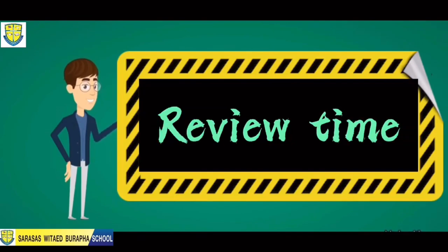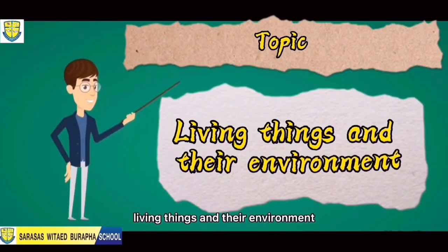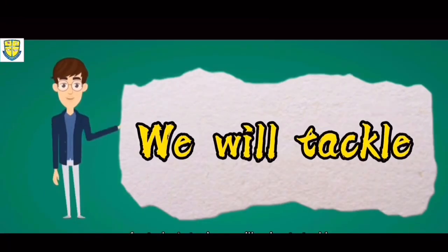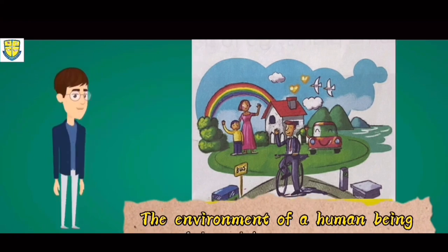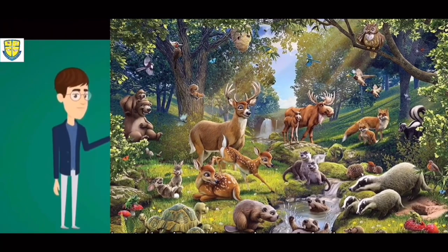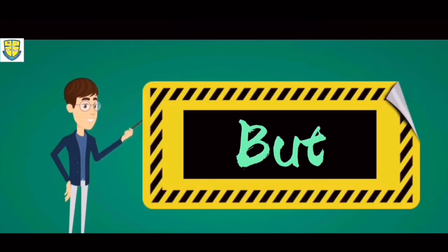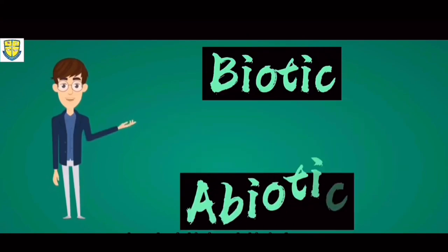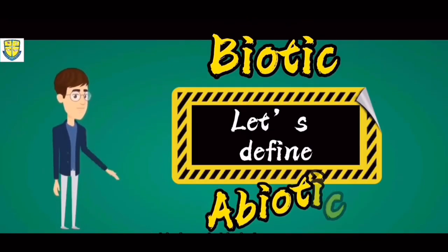Now let's proceed to our review to recall our topics. Our topic is living things and their environment. For today we will tackle the environment of a plant and the environment of a human being. Let's start first with the environment of a plant. Here's a picture of a plant's environment — it includes biotic and abiotic factors that influence the growth and development of plants. But what are biotic and abiotic factors? Let's define them.